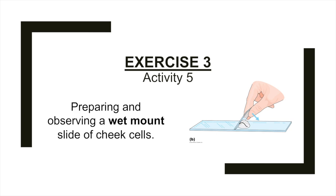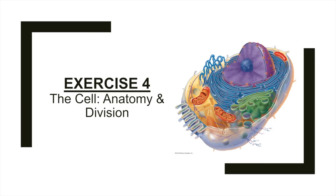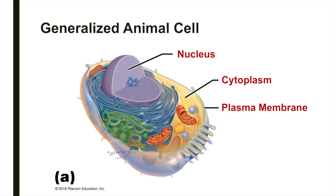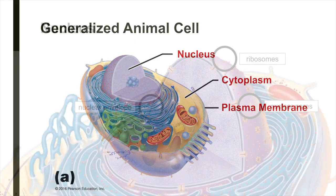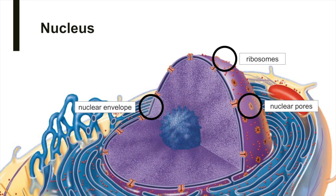In exercise four, we'll be reviewing cell anatomy and division. In general, all animal cells have three major regions that you'll be able to identify with a compound light microscope: the nucleus, plasma membrane, and cytoplasm. The nucleus is near the center of the cell, surrounded by cytoplasm, which is in turn enclosed by the plasma membrane.